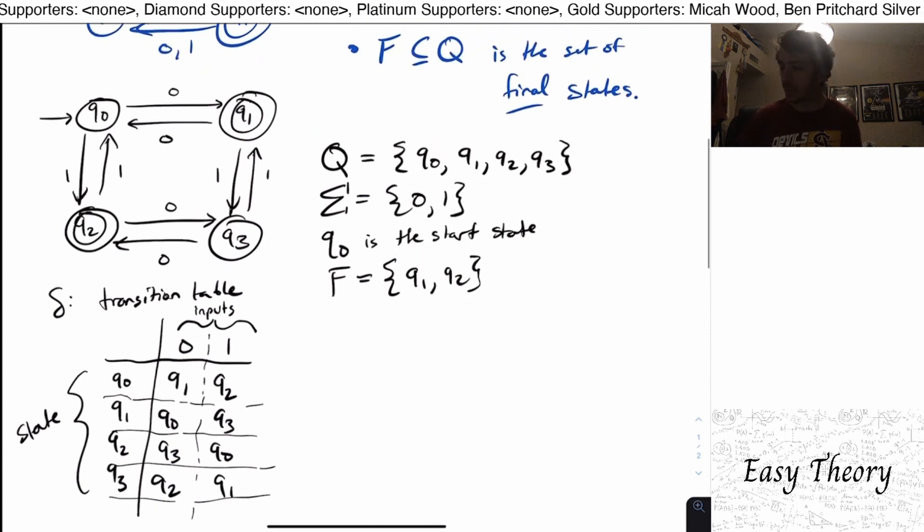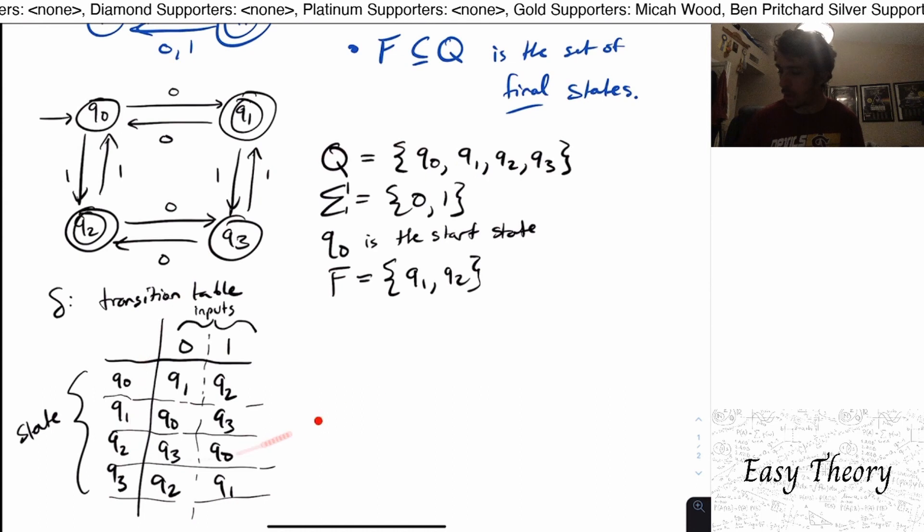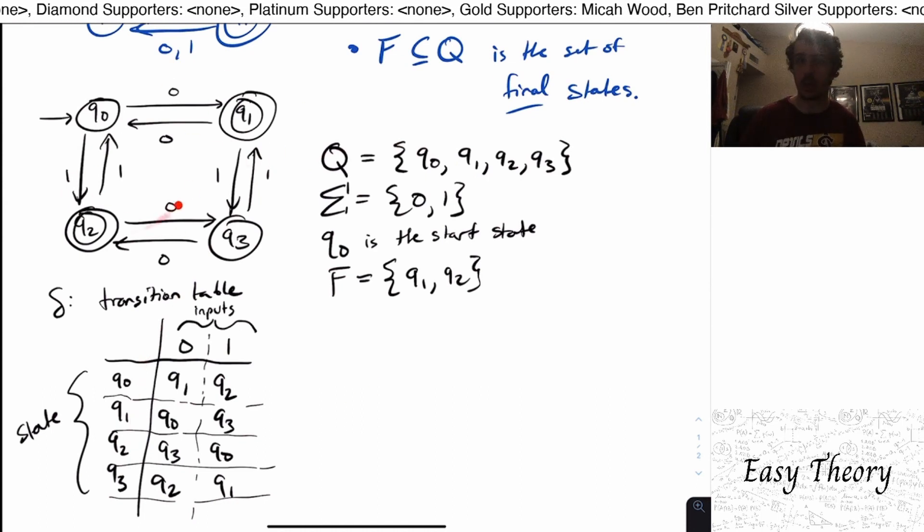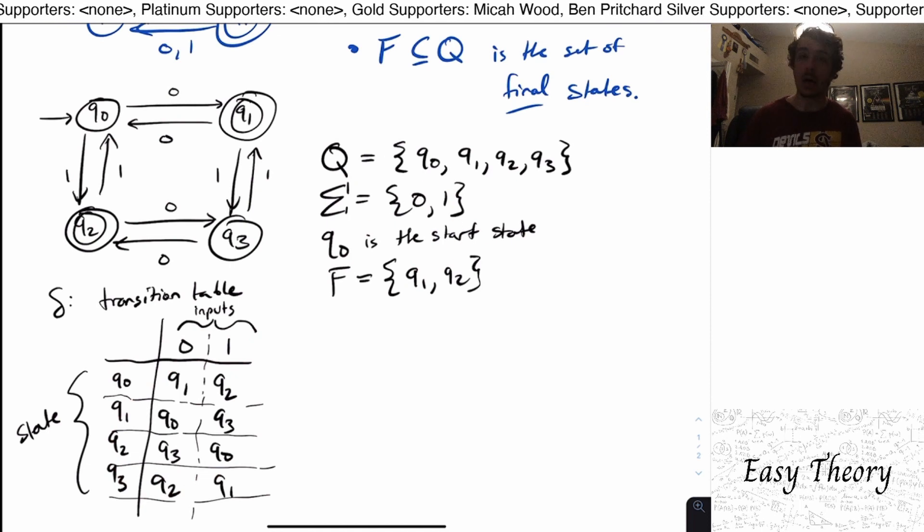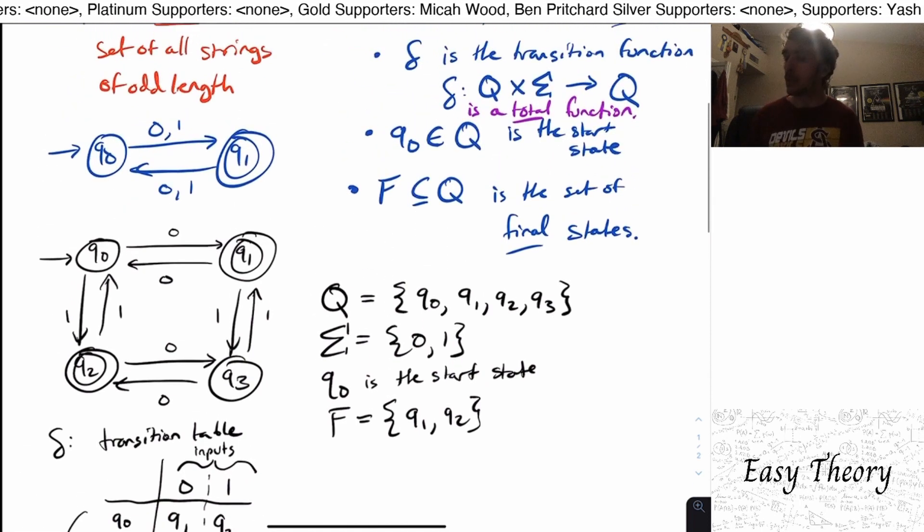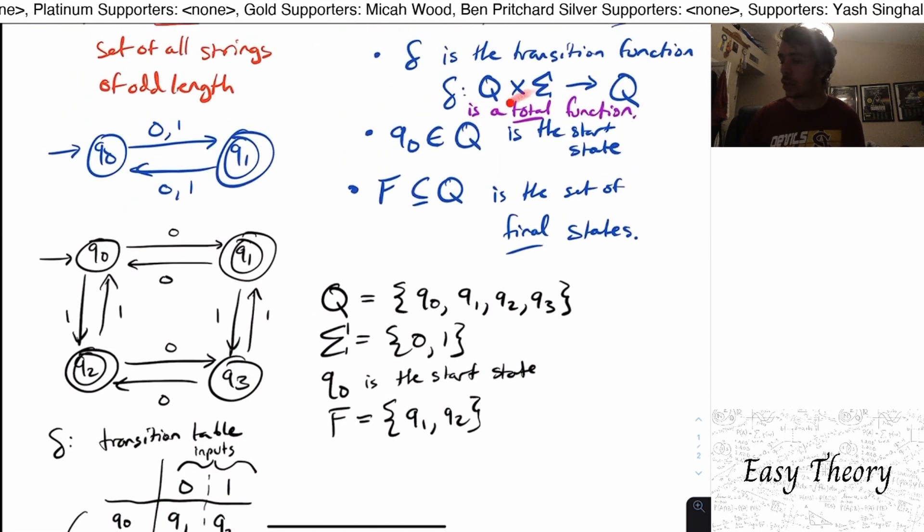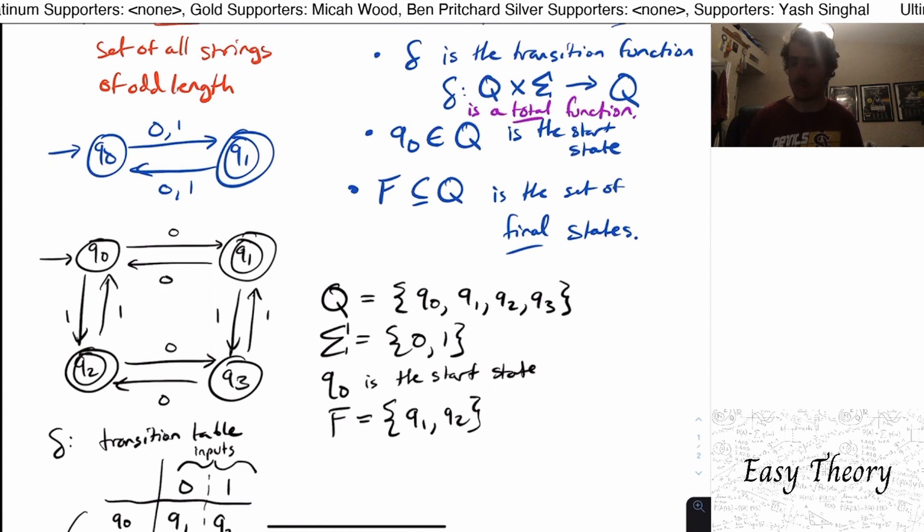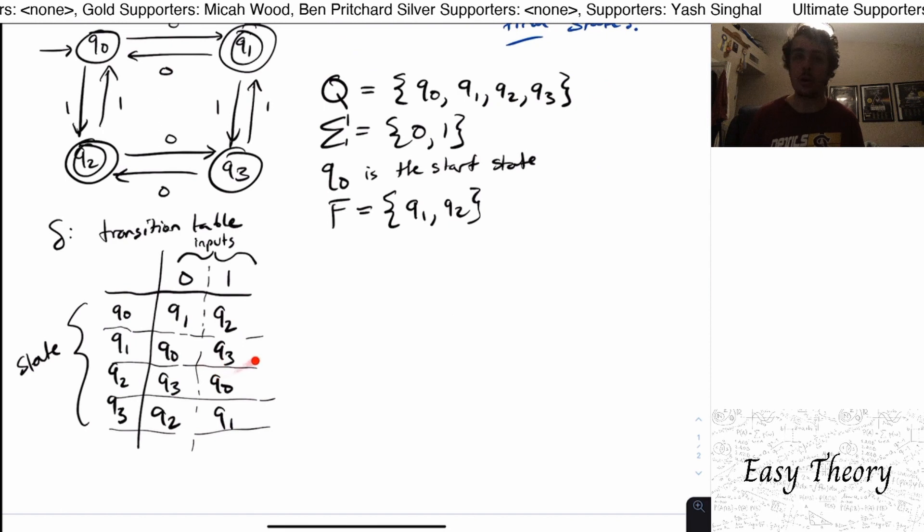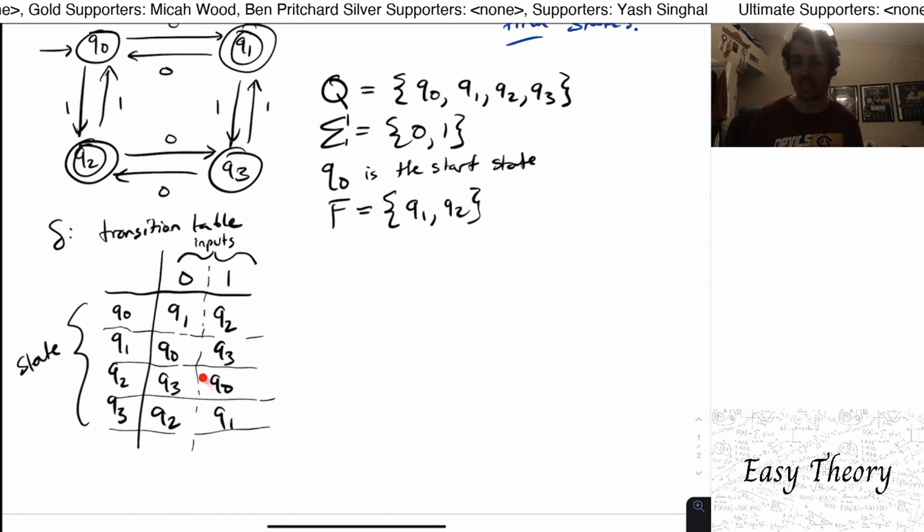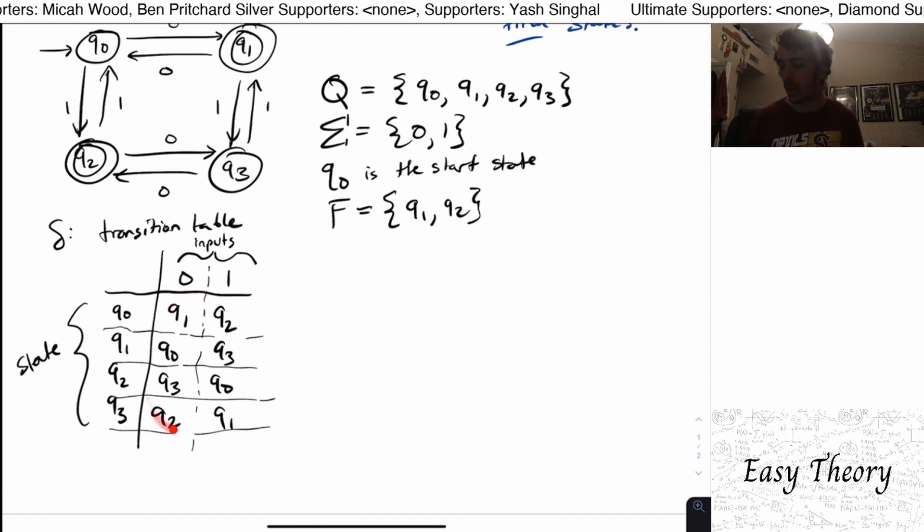One other, so this is a formal specification of this picture of a DFA here. This is a formal representation of what this DFA is. Another way to visualize what a total function is, if you didn't get it before, is that when you make this table right here, there are no unfilled entries in this table. That's just another viewpoint on what a total function actually is.